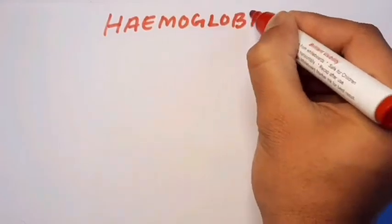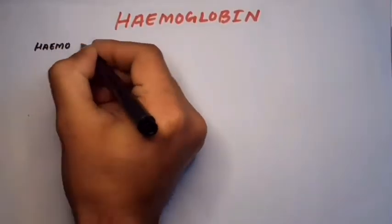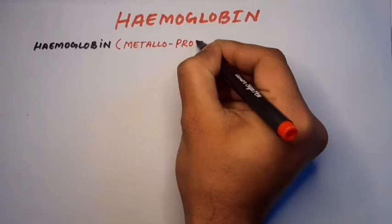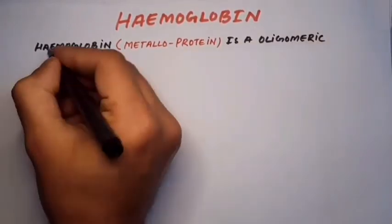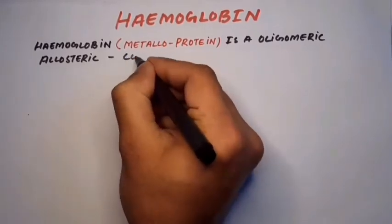Haemoglobin, a metalloprotein, is an oligomeric, allosteric, conjugated protein.